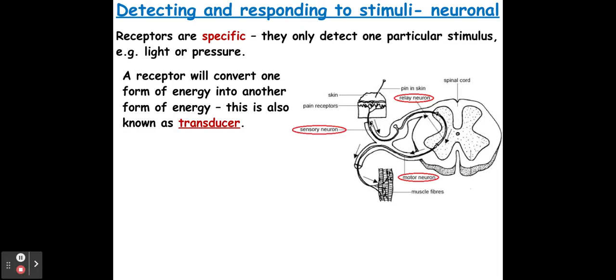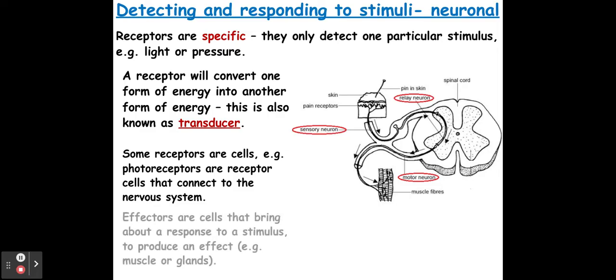You should know this basic reflex arc from GCSE where I've got my receptors being attached to my sensory neuron. The sensory neuron feeds into the central nervous system where I find my relay neurons. My relay neurons are attached to my motor neurons, and my motor neurons are attached to a muscle or a gland which is also known as an effector. So that muscle or gland will then trigger a response.